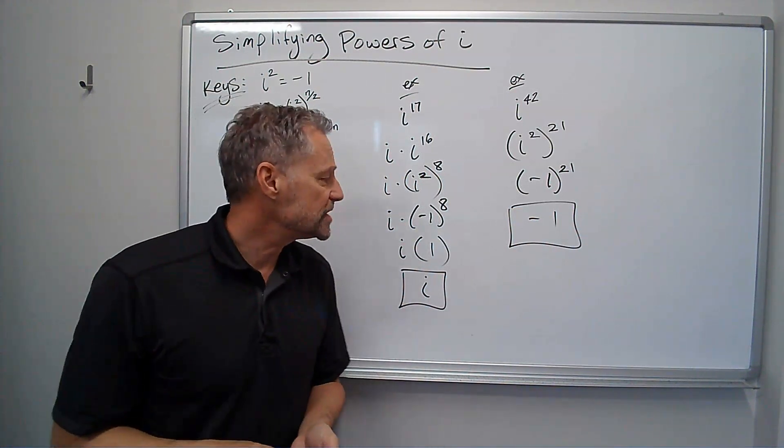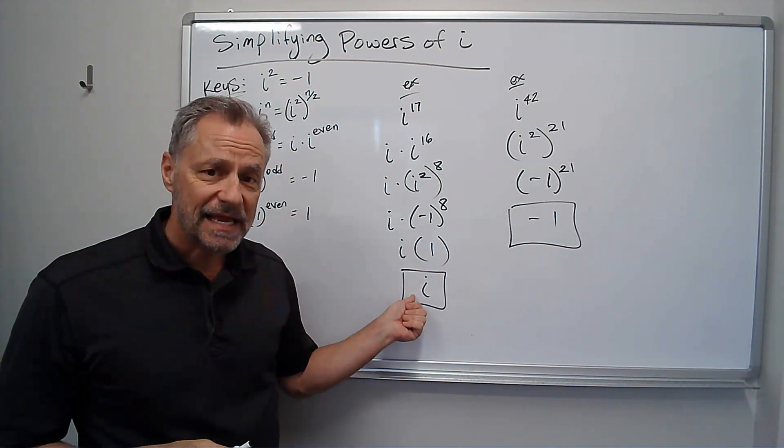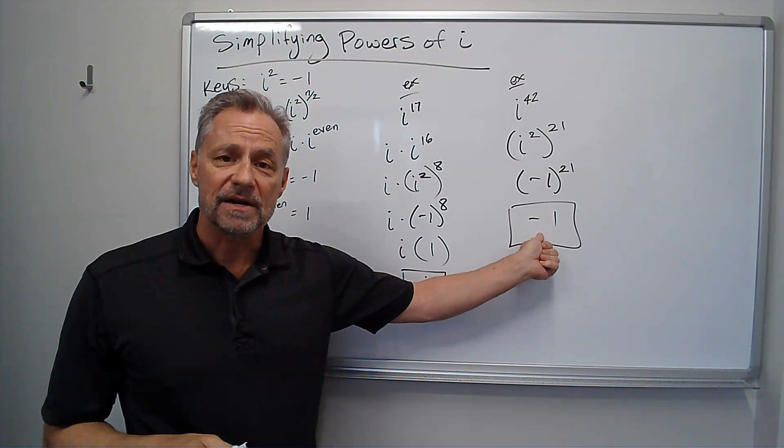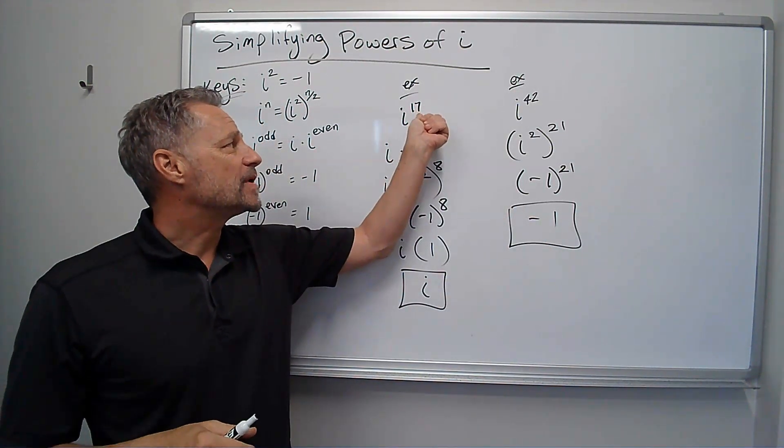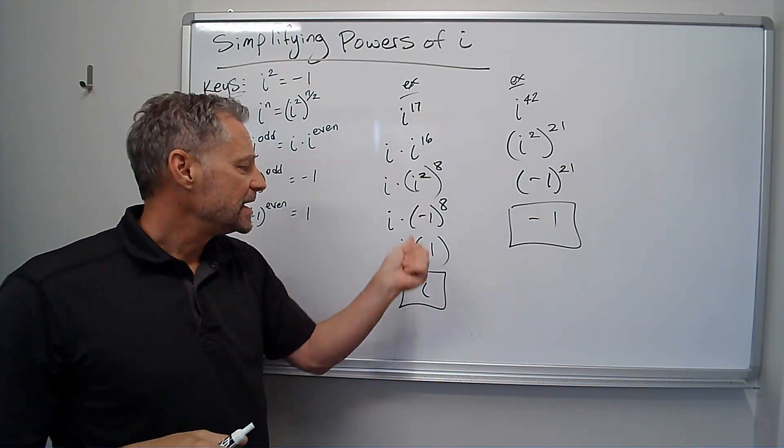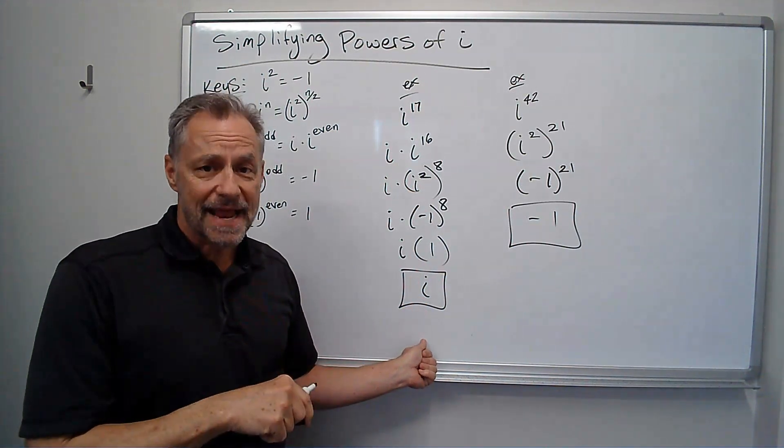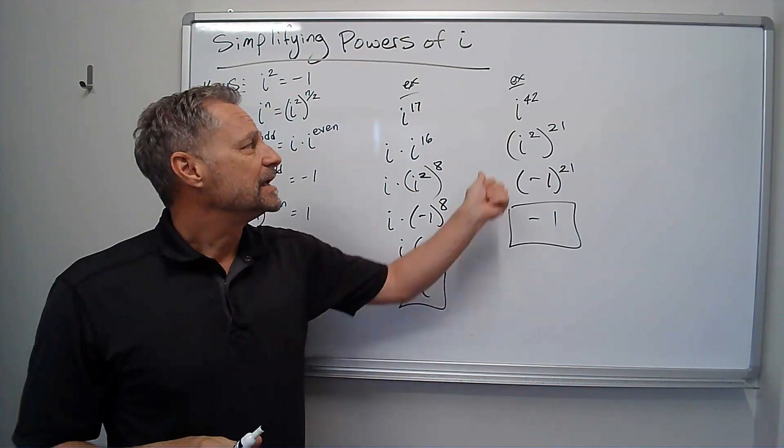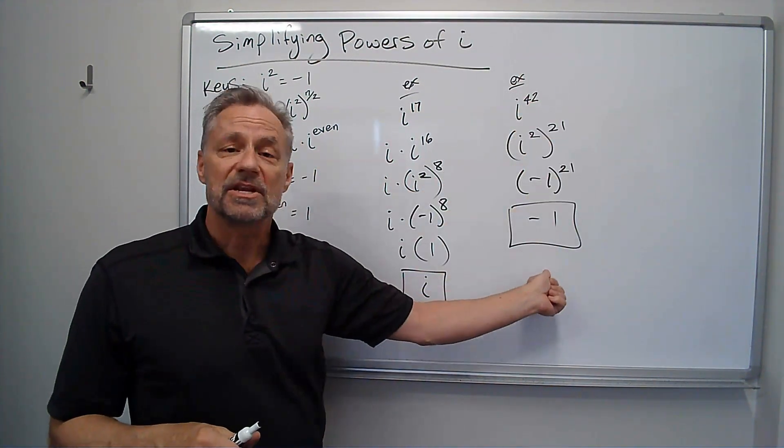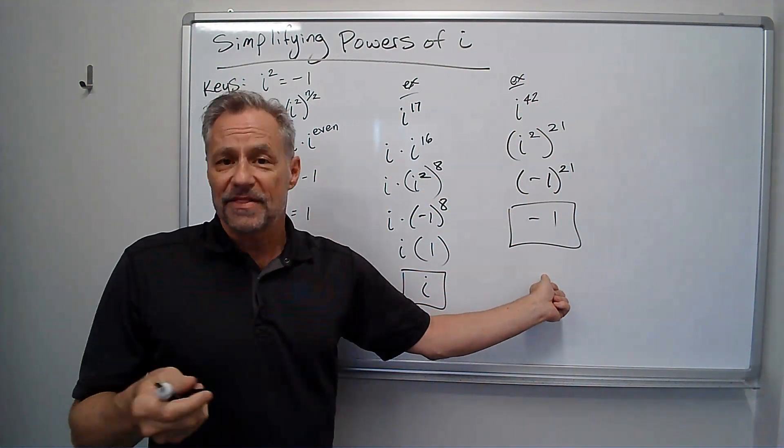There's actually only four answers you can get. You can get i or negative i. You can get 1 or negative 1. If it's i to an odd number, it's always going to have an i in the answer, either positive or negative i. If it's i to an even power, it's either going to be 1 or negative 1. The i's will cancel out.